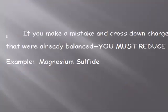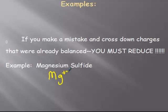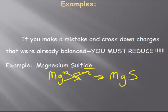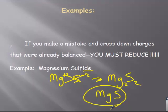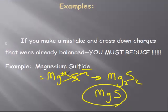If you make a mistake and you do cross them down when you weren't supposed to, magnesium plus two, sulfide would be sulfur minus two. If you did cross those, you'd get Mg2S2. But with ionic substances, we always reduce. If we can divide by two, divide by three, we do that. So MgS. And had you realized in the beginning that they were already balanced, then you would have just left it as MgS. So you end up in the right place.